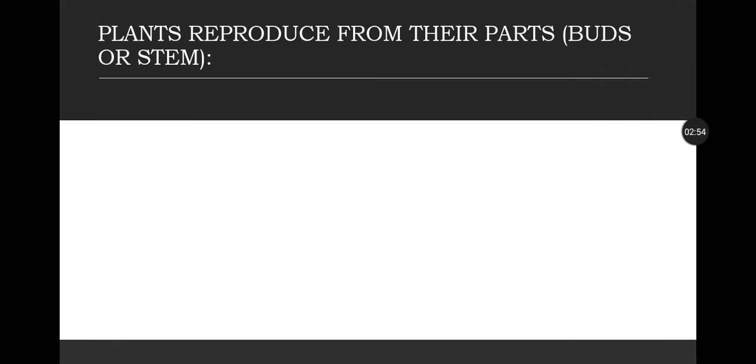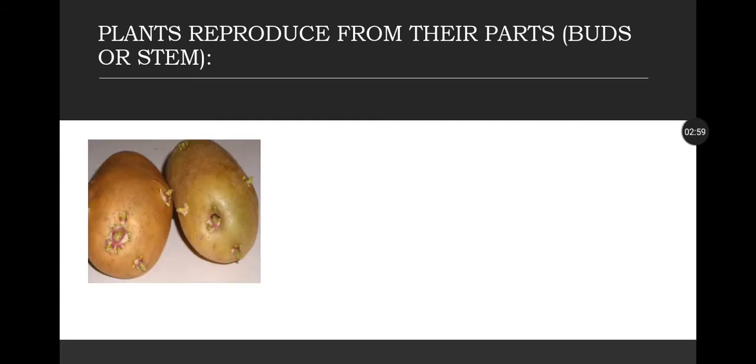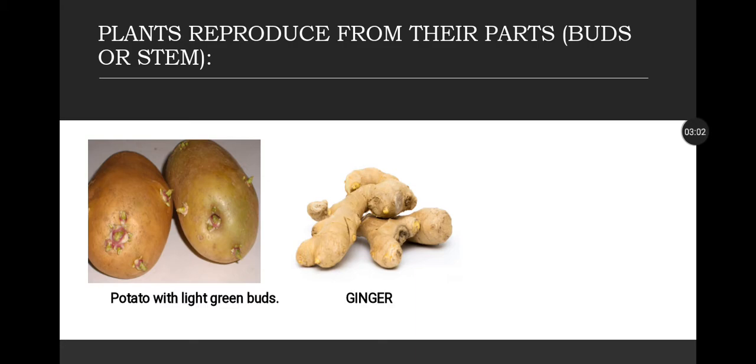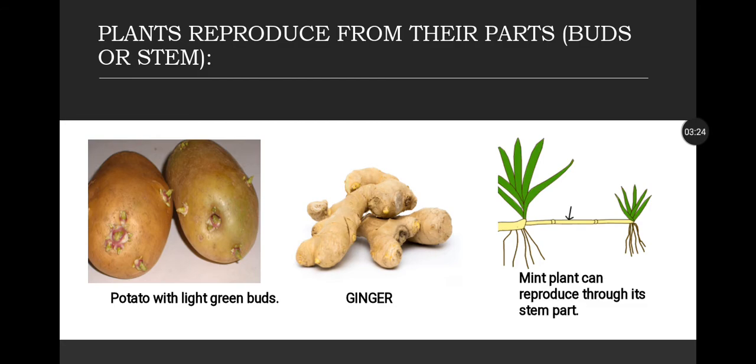Now, plants that reproduce from their parts, for example buds or stems. Look at these pictures: potato and ginger. You can see the light green buds present on the potato surface. Here's another example - look at this picture, you can see a stem. This stem will also be able to grow a new plant. For example, in a mint plant, a new young mint plant can grow from the stem of the mint plant.